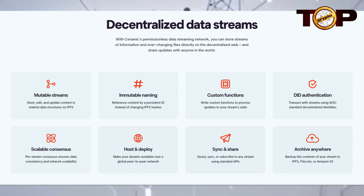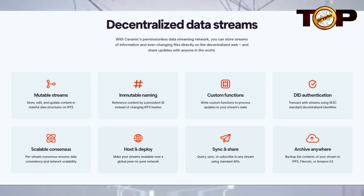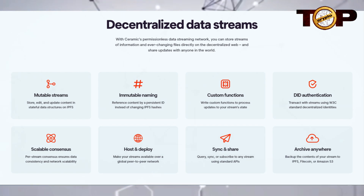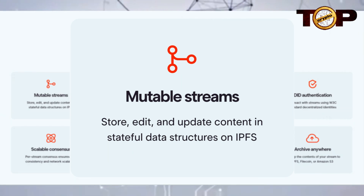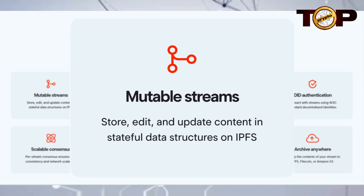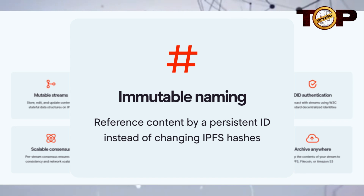With Ceramic's permissionless data streaming network, you can store streams of information and ever-changing files directly on the decentralized web and share updates with anyone in the world. Mutable streams allow you to store, edit, and update content and stateful data structures on IPFS.